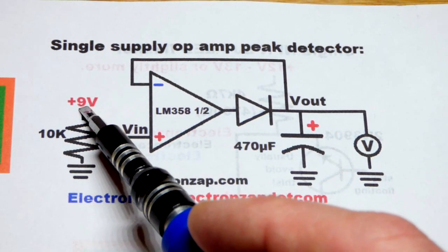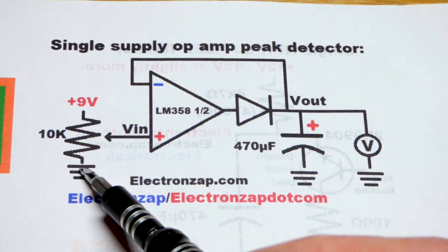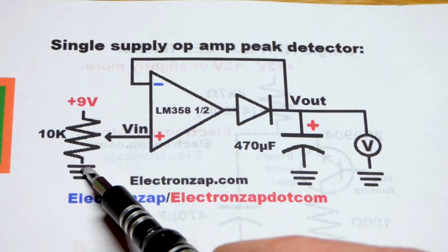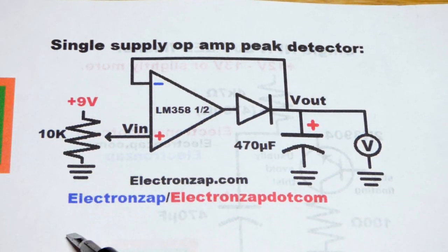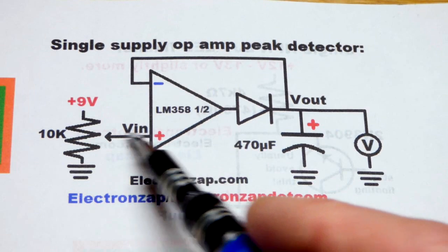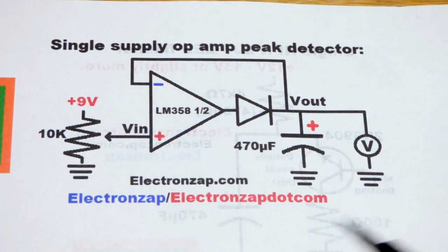Single supply means we have a positive voltage in relationship to ground. There's also dual or split supply power where you have ground and also a negative voltage in addition to the positive. But here we're just going to use the positive voltage, single supply.